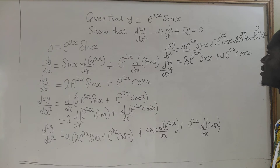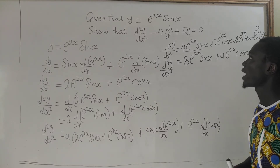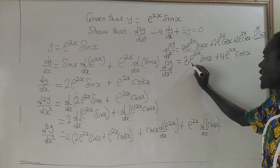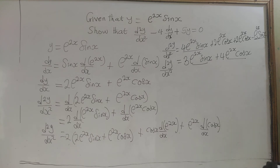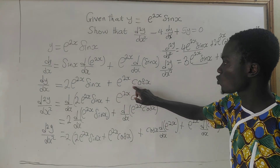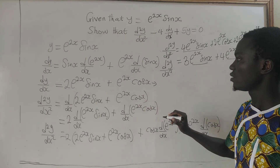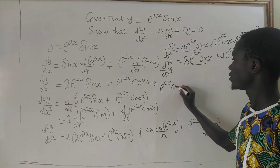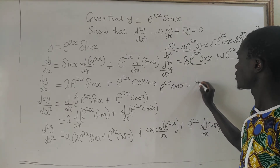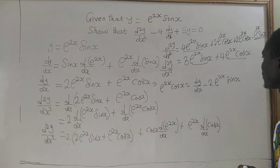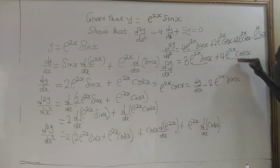Now we have to prove that d²y/dx² minus 4·dy/dx plus 5y equals 0. Our final answer still contains e^(2x)·cos(x), which we need to eliminate. From the first derivative expression, we can make e^(2x)·cos(x) the subject: e^(2x)·cos(x) equals dy/dx minus 2e^(2x)·sin(x). We are going to replace e^(2x)·cos(x) with this.